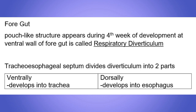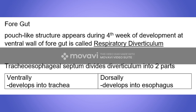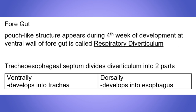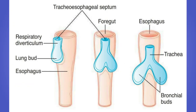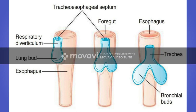The upper two-thirds of the esophageal muscles are striated and the lower one-third consists of smooth muscles. The nerve supply for the upper two-thirds is through the vagus nerve, and the lower one-third is supplied by the splanchnic nerves.